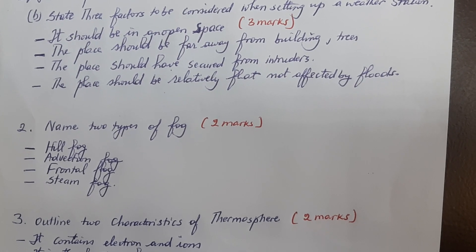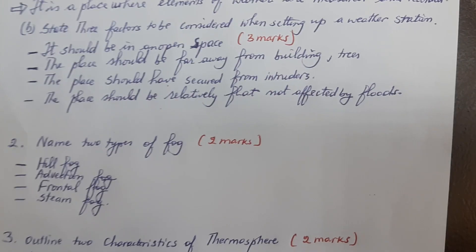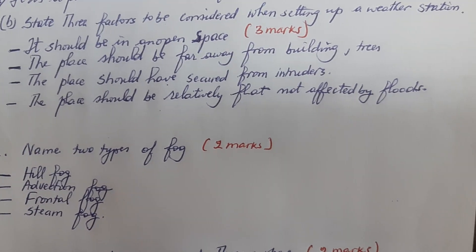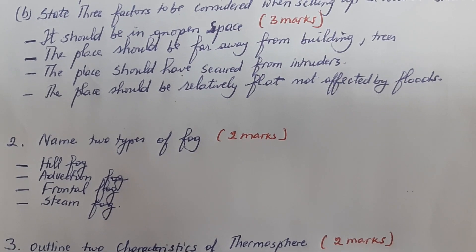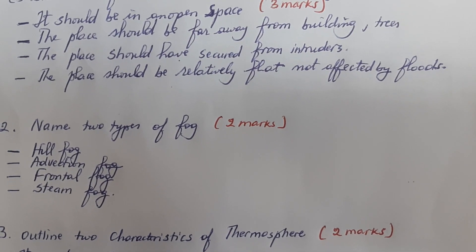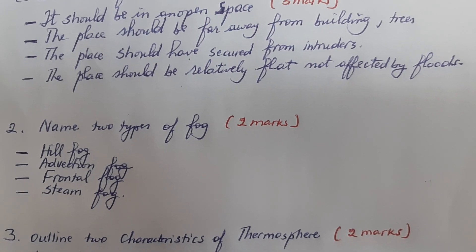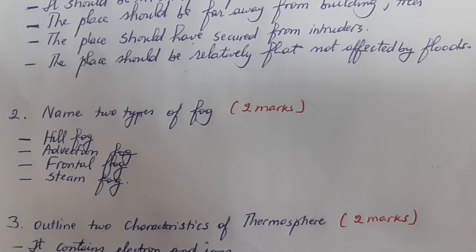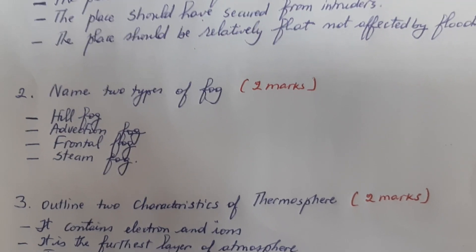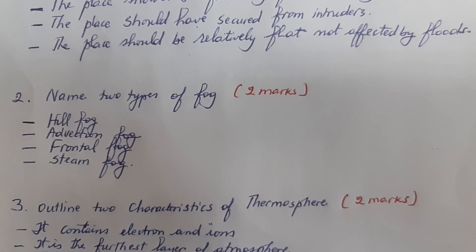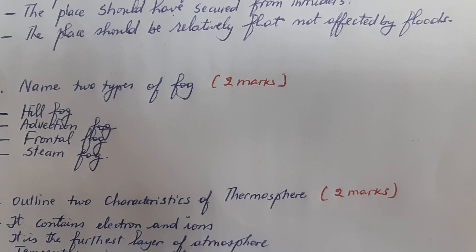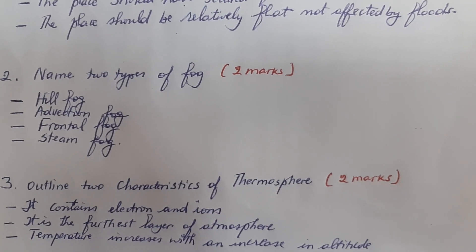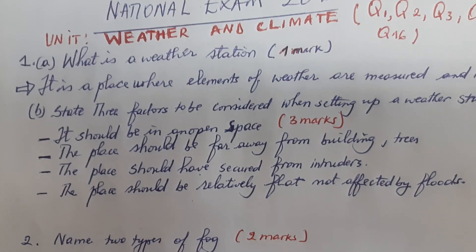The factors to be considered when setting up a weather station include the following. The place should be far away from buildings or trees. The place should be in an area where there is security, far away from intruders. The place should also be relatively far away from flooding so as not to be affected by floods.